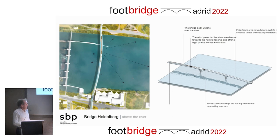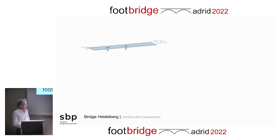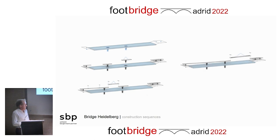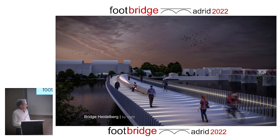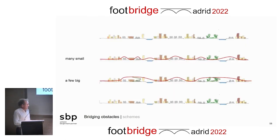The soffit image was very important for us because many people walk under the bridge and see it from below. The construction is a bit different: we fabricated large elements, floated them in on the river, and placed them with a crane. Again, Christiane developed nice concepts for the night view. We proposed a very respectful and elegant solution in front of the old castle — not having big structures, but a very elegant and appropriate one.